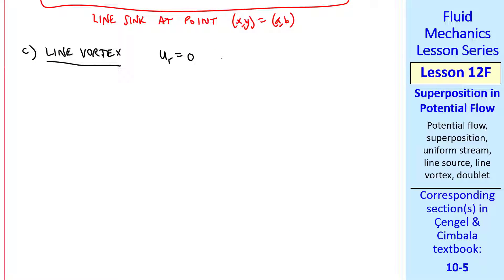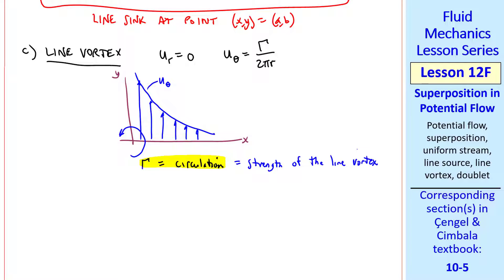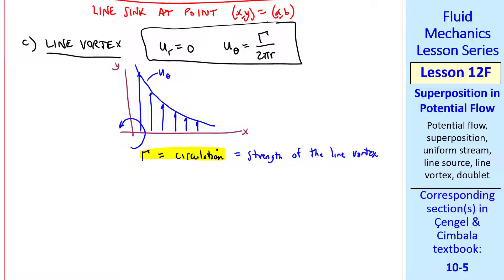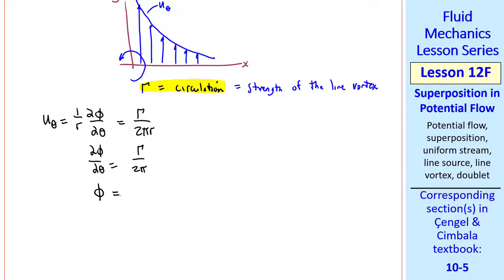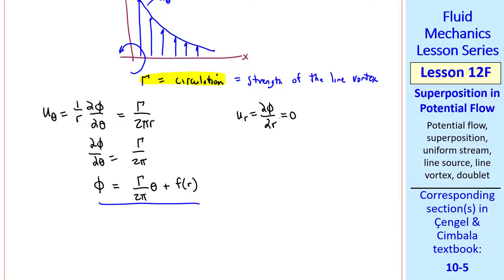Our third building block is called a line vortex. There's no radial flow, and we'll let u theta equal gamma over 2 pi r. In this flow, u theta is decaying like 1 over r. It goes to infinity at the origin, so we have a singularity here as well. Gamma is called the circulation, and this is the strength of our line vortex. Again, we use these velocity components to calculate phi and psi. We know that u theta is 1 over r del phi del theta, and that's given from here. We multiply by r and integrate with respect to theta, adding a function of the other variable. But u r is del phi del r, which is 0.